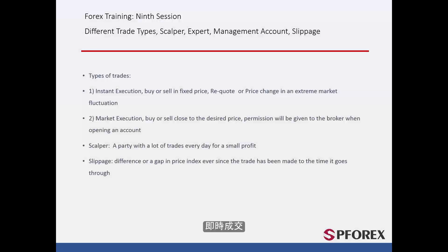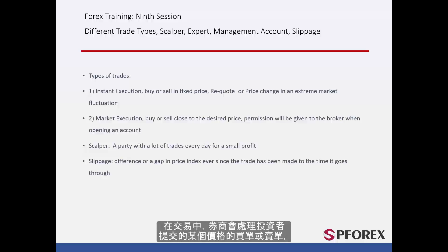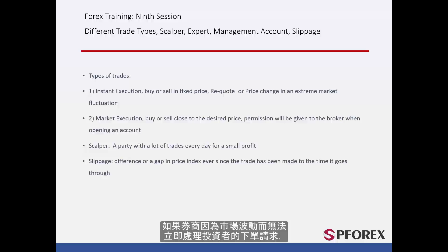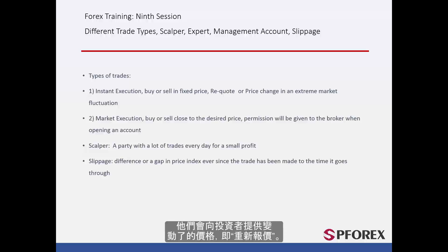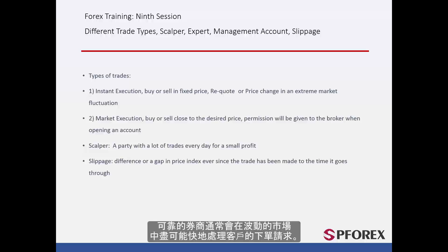First we will look at instant execution. Here the broker will process buy or sell requests from an investor at the exact price they made. Requests from the investor to sell and close orders are handled the same way. If a broker is not able to execute the investor's request immediately due to market fluctuations, then the broker will provide the investor with the price change or a requote. Reliable brokers intend to apply their customers' requests in float markets as fast as possible.